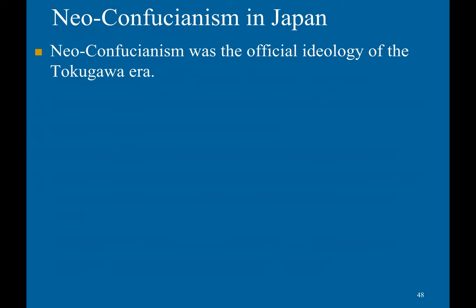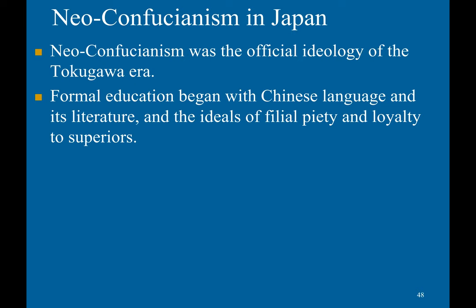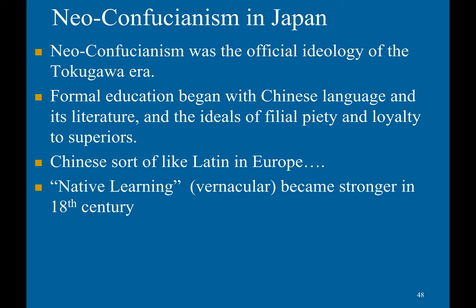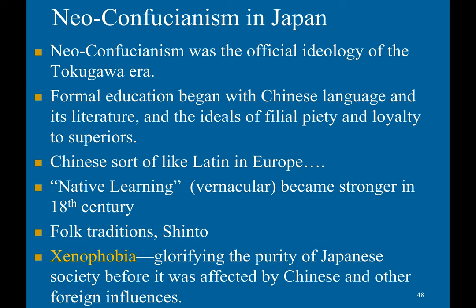Neo-Confucianism was the official ideology of the Tokugawa era. Formal education began with the Chinese language and its literature and the ideas of filial piety and loyalty to superiors. However, native learning, or vernacular studies, became stronger in the 18th century as a nativist backlash, emphasizing folk traditions and Shinto. This contributed to the xenophobia in Japan, which still persists today, and glorified the purity of Japanese society before foreign influences.